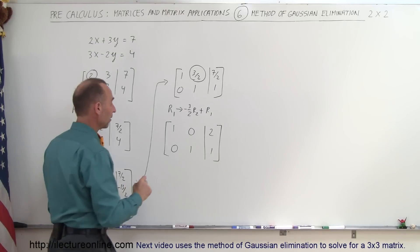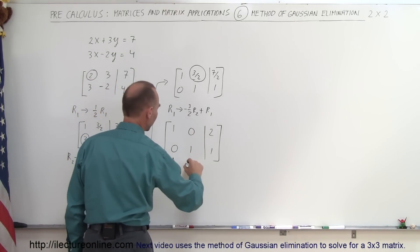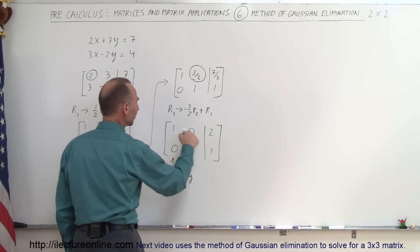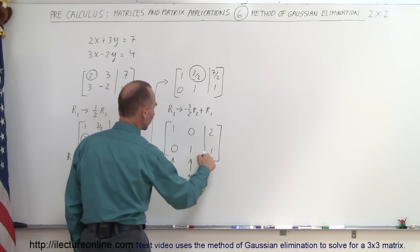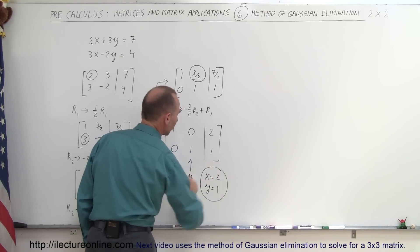And there's the end. I can now say that since this column represents my x value and this column represents my y, I can say that 1 times x equals 2 and 1 times y equals 1. So x equals 2, y equals 1, and that's the solution.